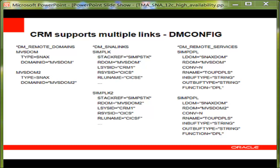Here, we configure multiple links in the DM config file. On the left, there are two remote domains, two remote regions. In the middle, there are two SNA links which correspond to two remote domains. And on the right, we show how the same service is advertised by both remote domains.